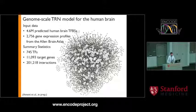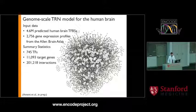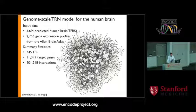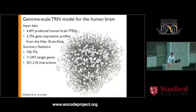Putting these things together, we're able to build a model for transcriptional regulation in the human brain, and we're expanding this to other tissues. We start with around 4.5 million transcription factor binding sites predicted by DNase-seq and other ENCODE data, together with external transcriptomic data — in this case, 2,700 microarrays from the Allen Brain Atlas — and end up with a transcriptional network incorporating targets for 700 transcription factors regulating 11,000 target genes through 200,000 interactions.